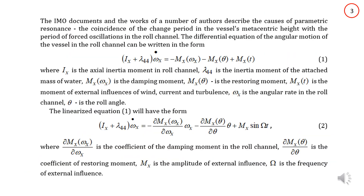The cause of parametric resonance is the coincidence of the change period of the vessel's metacentric height with the period of forced oscillations in the roll channel. The differential equation of the angular motion of the vessel in the roll channel can be written in the form of equation 1, where Ix is the axial inertia moment and the second term is the axial inertia moment of the attached mass of water.